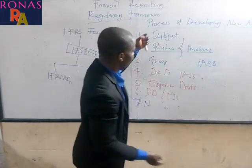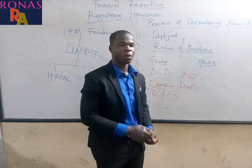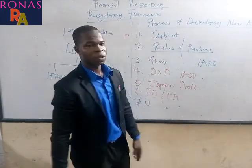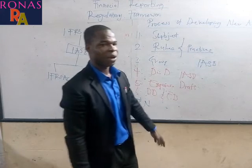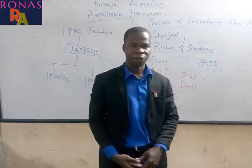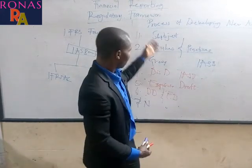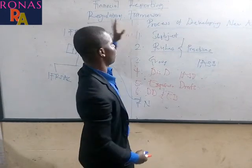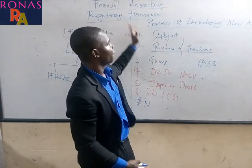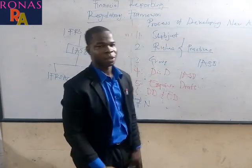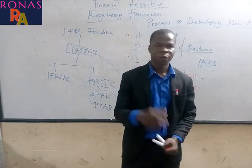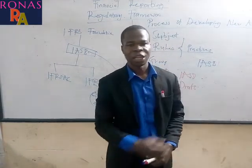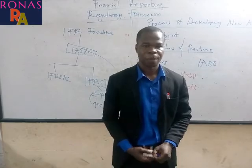Those are the seven processes that the board goes through to come out with a new accounting standard. In the next video we will look at the conceptual framework — please don't forget to subscribe for more of these interesting lessons. Thank you.